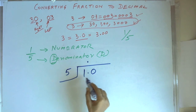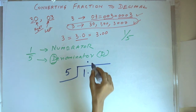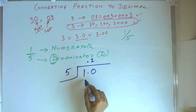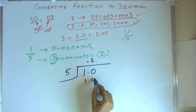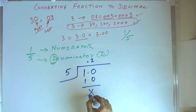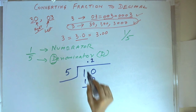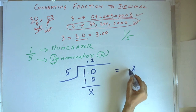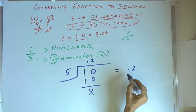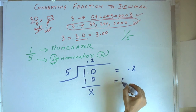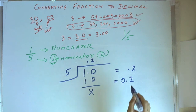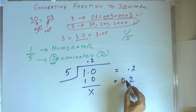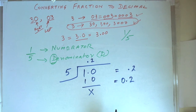Now we can divide 10 by 5. We get 2, with 10 and remainder 0. So the answer is 0.2. And 0.2 can be written as 0.2 because on the left hand side of the decimal, we can put any number of 0s and the value does not change.